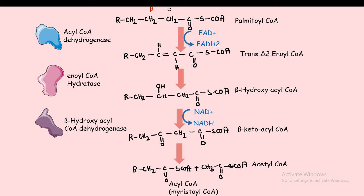Ultimately, an acyl CoA molecule is produced along with acetyl CoA. Two carbons are removed from the long chain — so if the chain was 16 carbons long, it becomes 14 carbons long — because a two-carbon acetyl CoA is released. The acyl CoA, in this case myristoyl CoA, can then be acted upon further by the same enzymes.